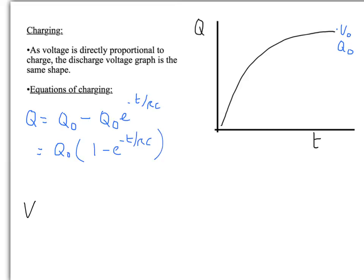Similarly for voltage, you have this expression. But notice the difference here with where you measure the V0 or Q0 on the graph. Obviously that's the final one, not the initial, like when we did the discharging expression.